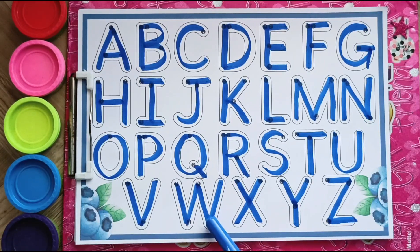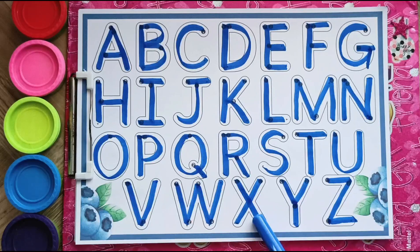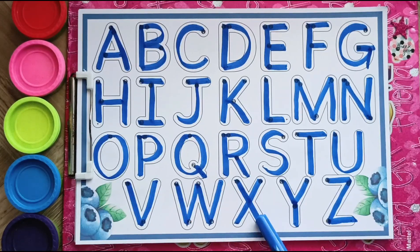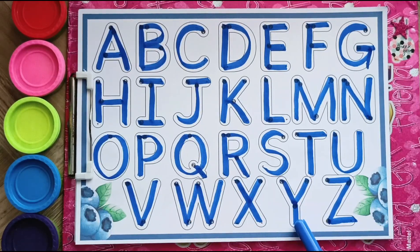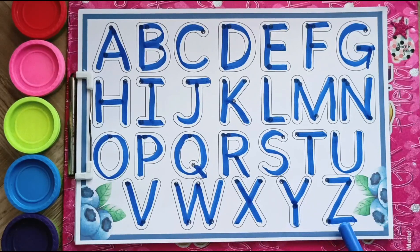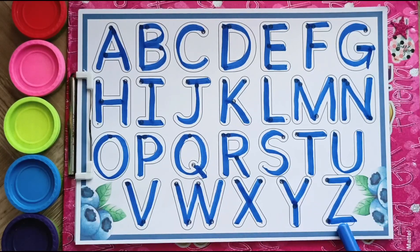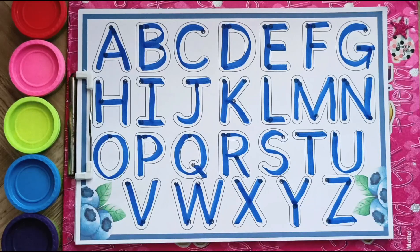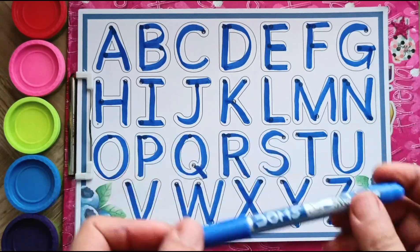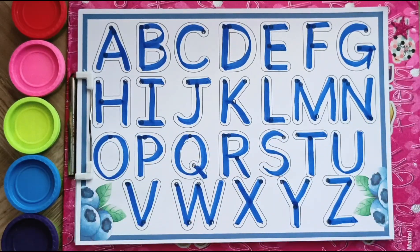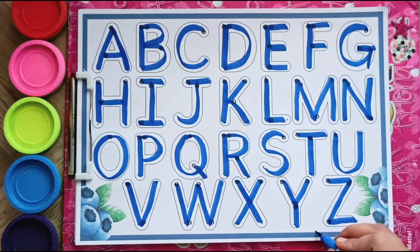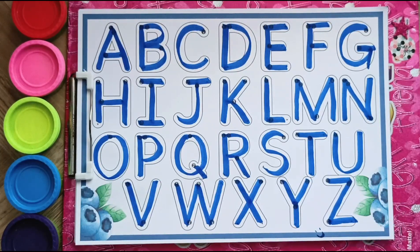V, V, Van. W, W, Well. X, X, Fox. Y, Y, Yo-yo. Z, Z, Zoo. These were our alphabets in the color indigo for the day. Thank you so much for watching and see you in the next video of the series. Bye!